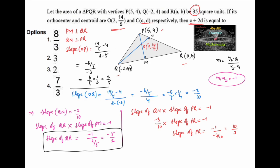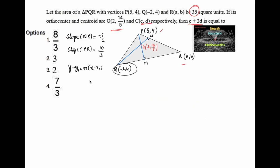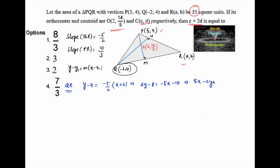We can find the equation of QR passing through point Q(-2, -4) using y - y1 = m(x - x1). With slope of QR = -5/2, we get 2y + 8 = -5(x + 2), simplifying to 2y - 8 = -5x - 10, so 5x + 2y + 2 = 0. This is equation 1.